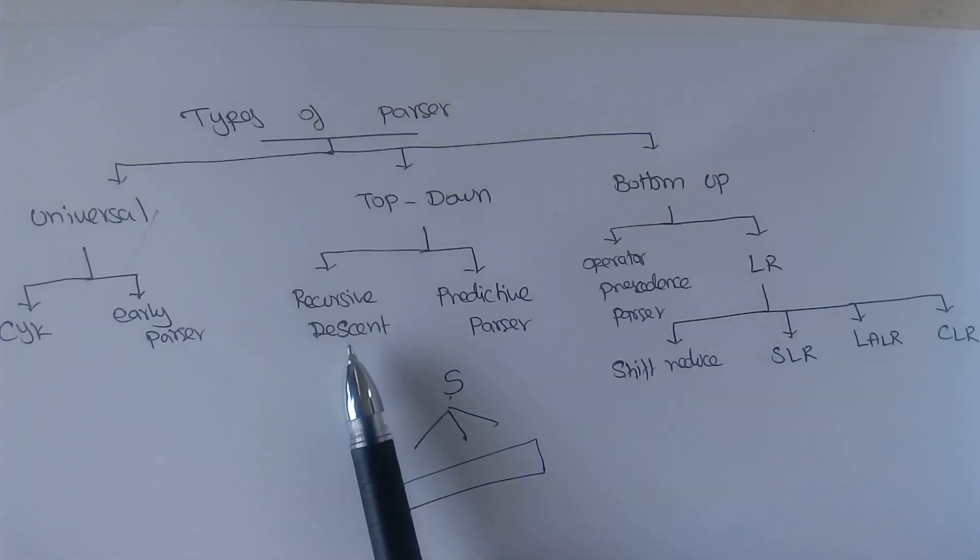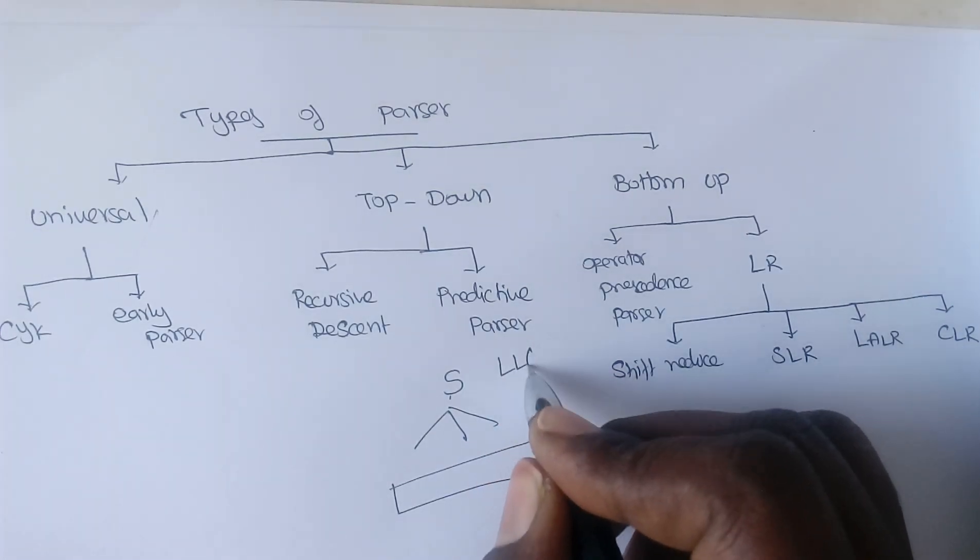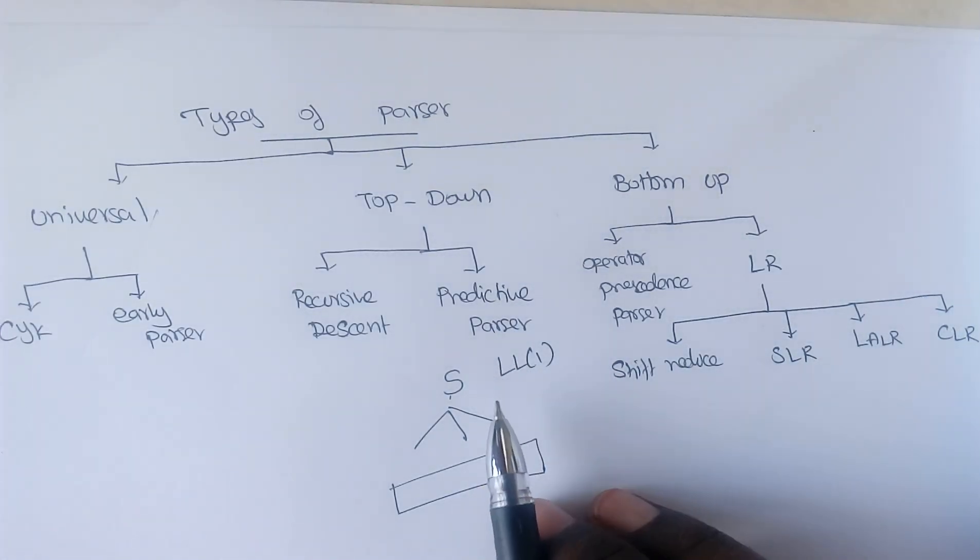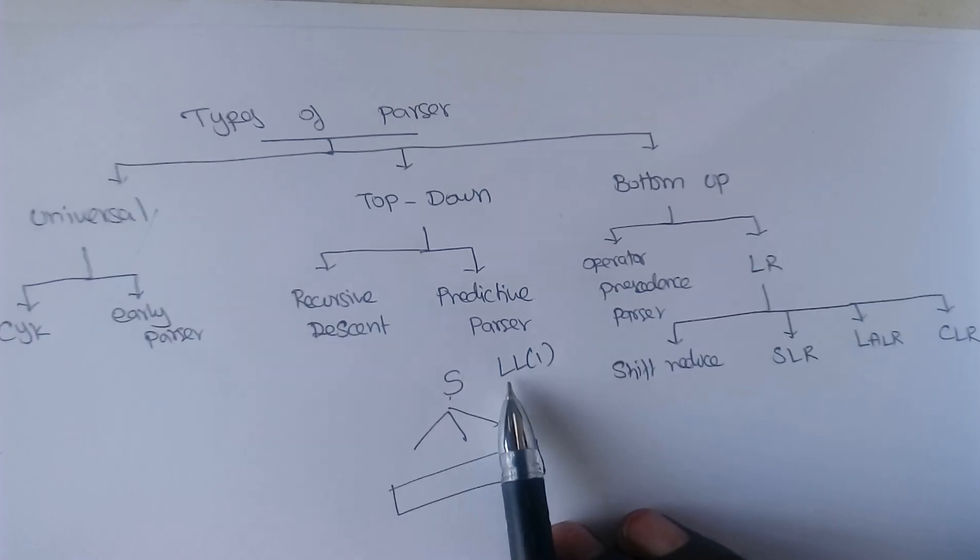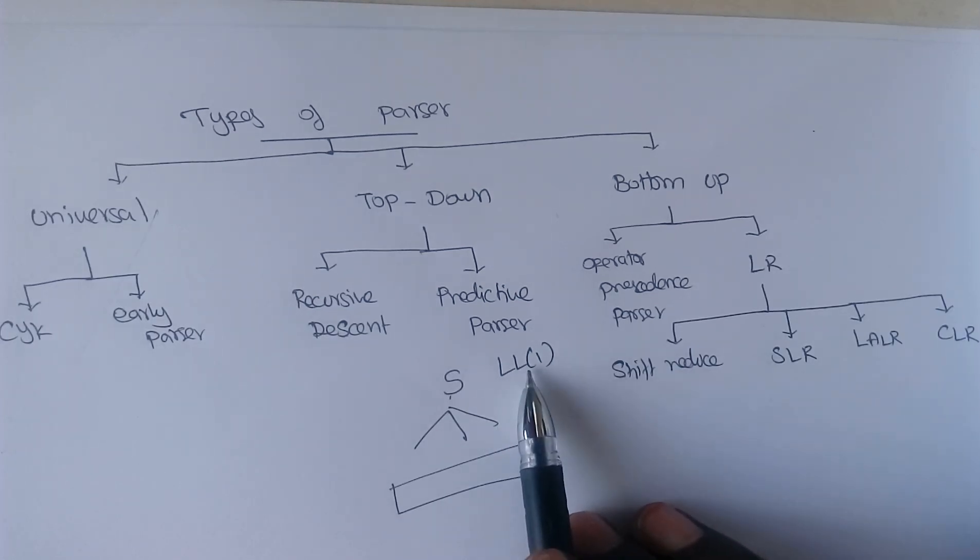Whereas predictive parser uses a predictive parsing table. We call this grammar as LL1 grammar. The reason is here we are going to scan the input from left to right. And we are going to use leftmost derivation for parsing. And one is your look-ahead operator.